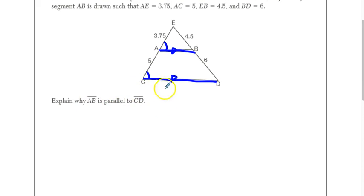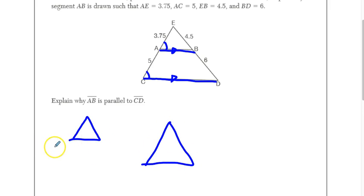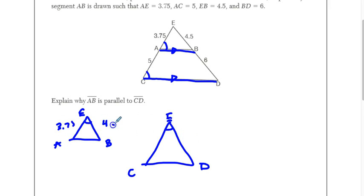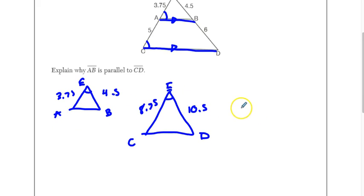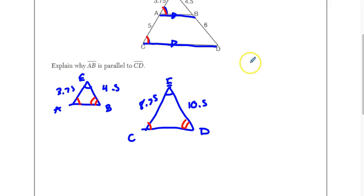The way I'm going to prove this is by showing side-angle-side similarity in the two small triangles. We draw triangle AEB and triangle CED. We know angle E is congruent to angle E by the reflexive property. The full side lengths are: CE = AE + AC = 3.75 + 5 = 8.75, and DE = EB + BD = 4.5 + 6 = 10.5. We check the ratios: 8.75 over 3.75 equals 2.33 repeating, and 10.5 over 4.5 also equals 2.33 repeating. So we do a side-angle-side proof — we've written our evidence.